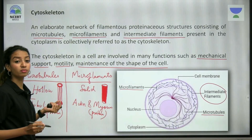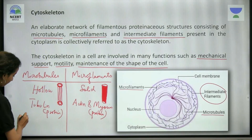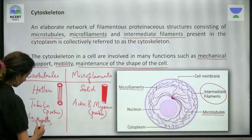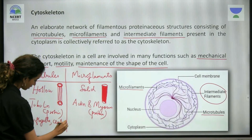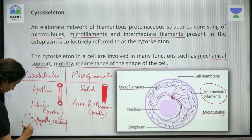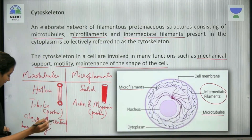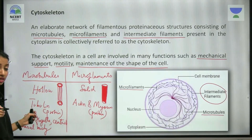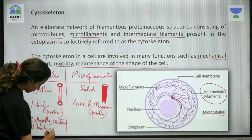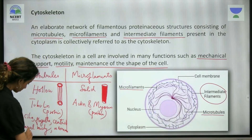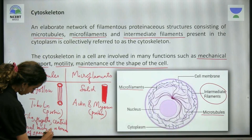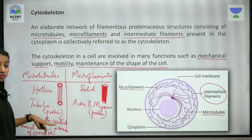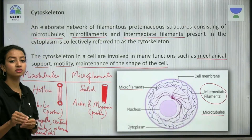Now let us look at the locations where microtubules can be seen. Microtubules are generally found in cilia, flagella, centrioles, and the basal body. You can also see microtubules in the axoneme of the sperm tail — the central axis of the sperm tail. So microtubules are found in cilia, flagella, centrioles, basal body, and the axoneme of the sperm tail.